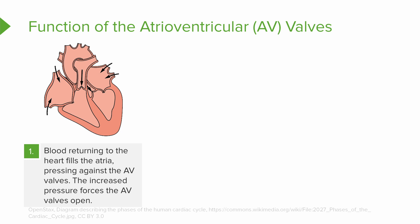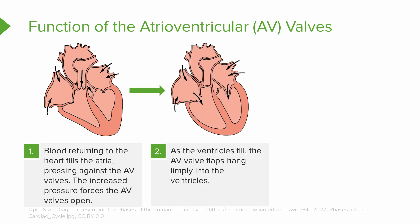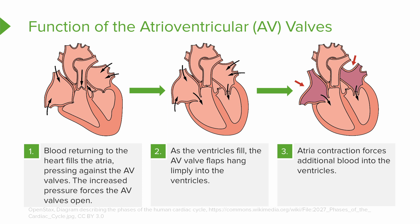So how do these AV valves function? Blood returning to the heart is going to fill the atria. As the blood is filling the atria, it is pressing up against the AV valve. This increases the pressure and eventually will force that AV valve open. Once the AV valve is open, the ventricle is now going to start to be filled. As the ventricle fills, the AV valve flap is going to hang limply into that ventricle. Once the atria contracts, this is going to force any additional blood still in the atria into the ventricle.